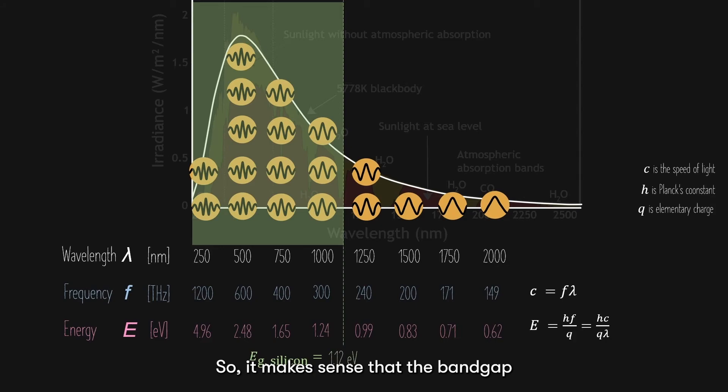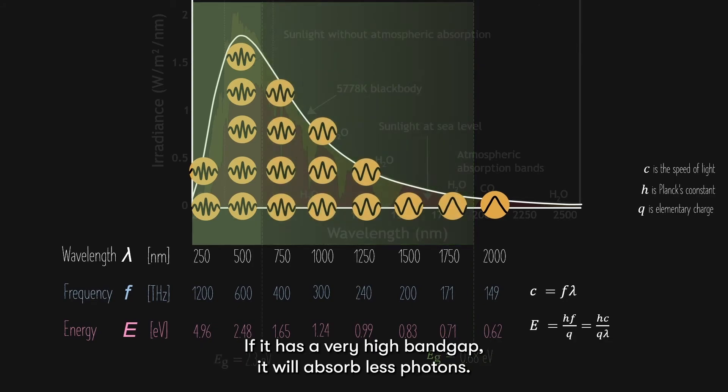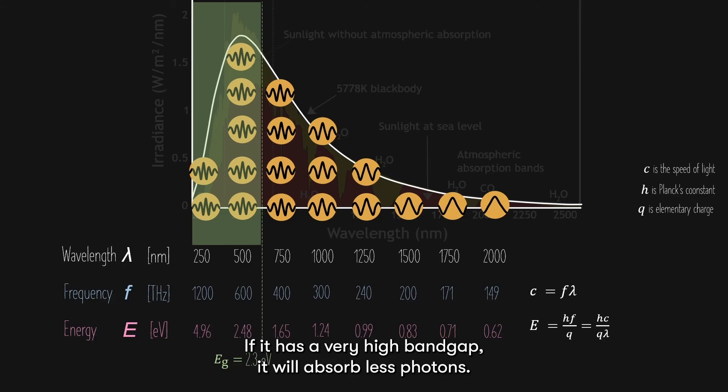So, it makes sense that the band gap will actually determine how many photons can be successfully absorbed, excite electrons, and contribute to photocurrent. If the semiconductor has a low energy band gap, it will absorb more photons. If it has a high energy band gap, it will absorb less photons.